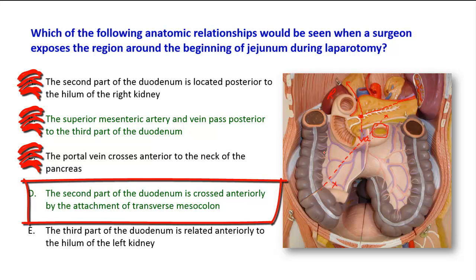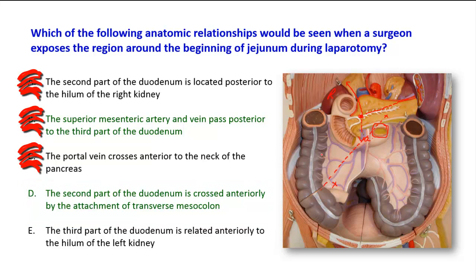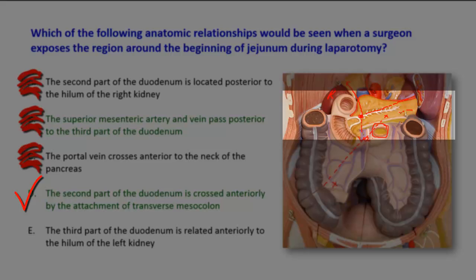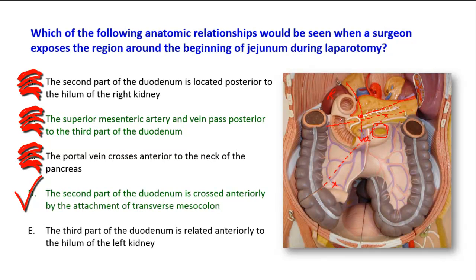Option D: the second part of the duodenum is crossed anteriorly by the attachment of the transverse colon. This option is correct because the transverse mesocolon, the mesentery of the transverse colon, is located horizontally across the posterior abdominal wall. It crosses the pancreas, crosses the second part of the duodenum, and divides the peritoneal cavity into supracolic and infracolic compartments. The second part of the duodenum is a retroperitoneal part.